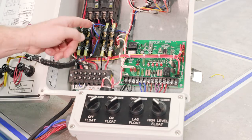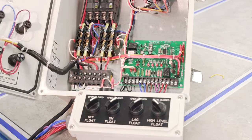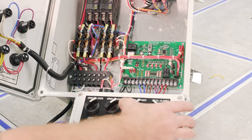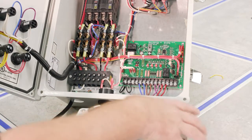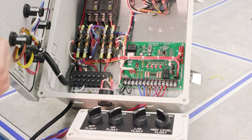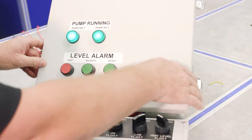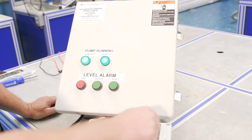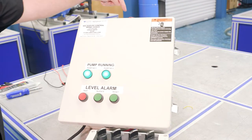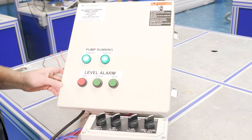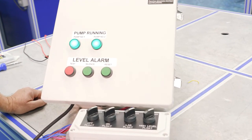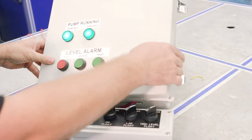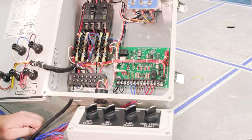Light goes on, contactor pulls in, we've got two pumps running. So in this scenario, the pump still can't keep up. So let's close this for a minute so we can see, and now the high level alarm. Light is on, alarm is on, let's just silence that, and then reset it.